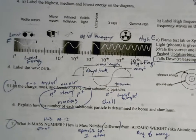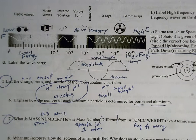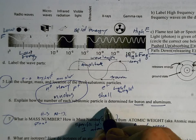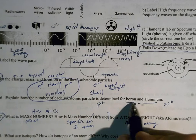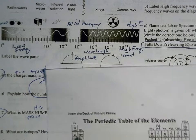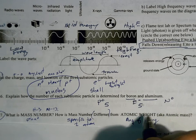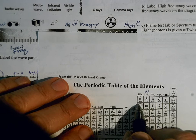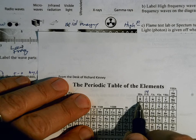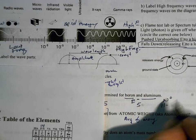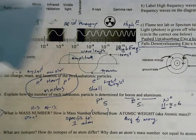Number six: explain how the number of each subatomic particle is determined for boron and aluminum. Subatomic particles are protons (positive charge), electrons (negative charge), and neutrons (neutral charge). For boron, the atomic number is 5, so there are 5 protons and 5 electrons. The mass number rounds to 11, so 11 minus 5 gives 6 neutrons. You can do the same process for aluminum.